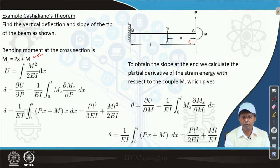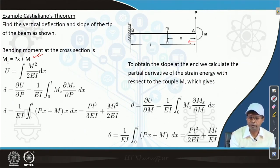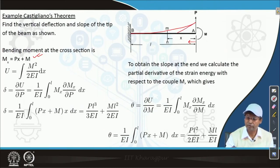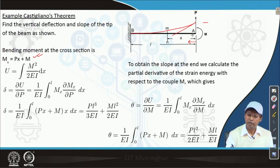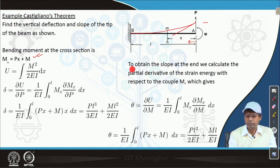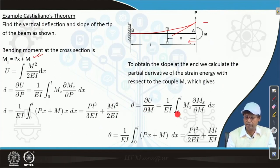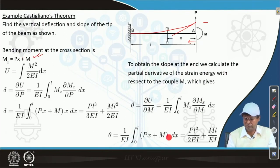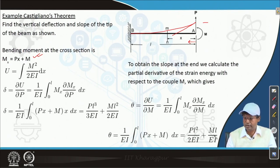For the slope at the end, we calculate the partial derivative of strain energy with respect to the couple M, giving theta = del U / del M. Here del Mx / del M equals 1, so integrating gives the slope as Pl²/(2EI) plus Ml/(EI).